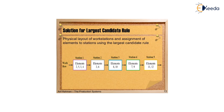The final solution assigns: station 1 — elements 2, 5, 1, 4; station 2 — elements 3, 6; station 3 — elements 8, 10; station 4 — elements 7, 9; and station 5 — elements 11, 12. This physical layout of workstations and assignment of elements is determined according to the Largest Candidate Rule. Thank you.